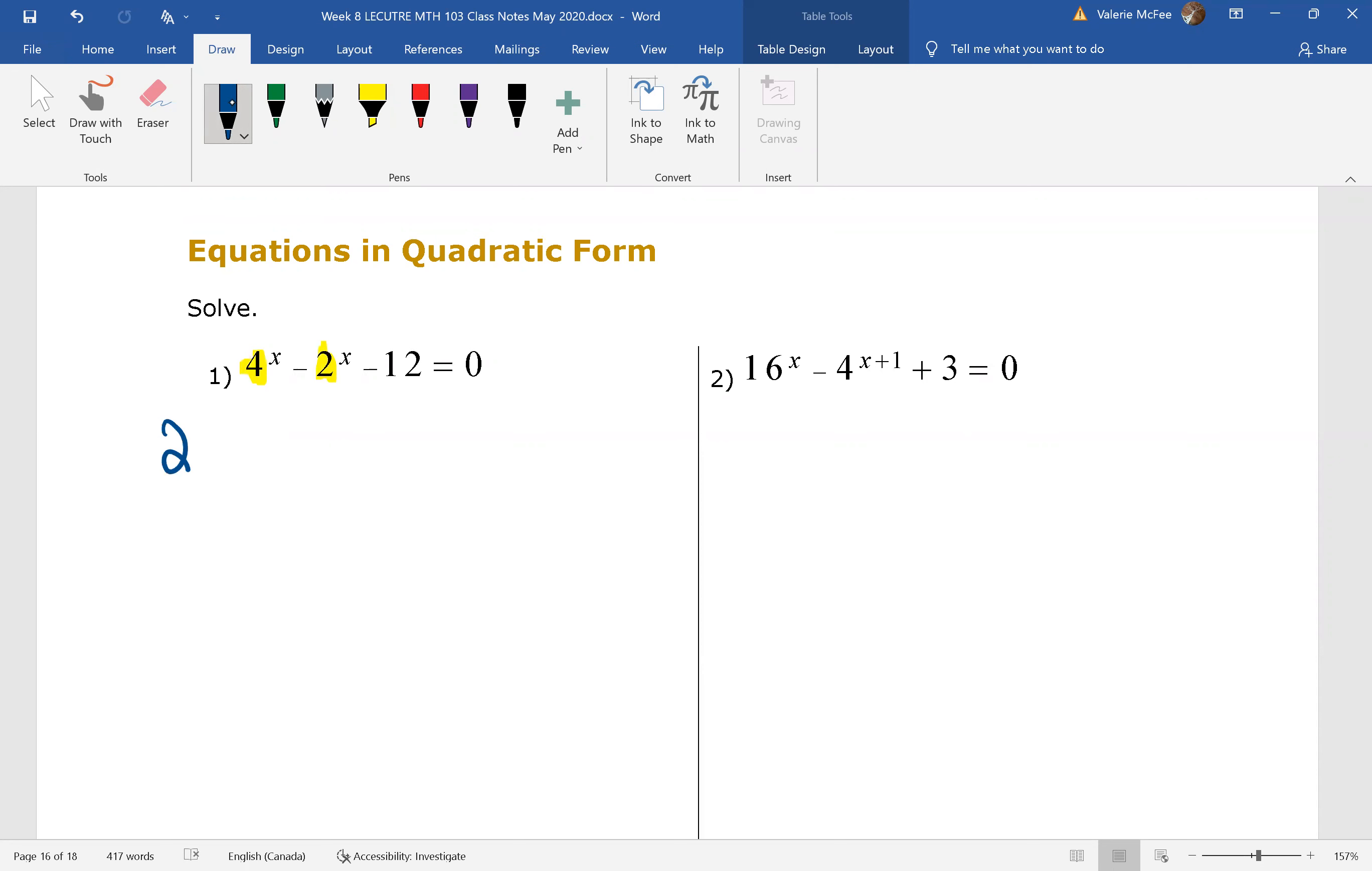4 can be written as 2 squared to the power of x. Then we have minus 2 to the power of x minus 12 equals 0. Let's talk about that 4 to the power of x for a moment.